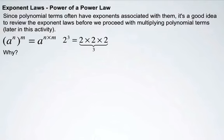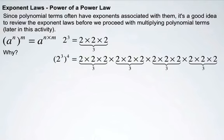Why? 2 to the third. 2 to the third to exponent 4 means 2 to the third, or this, 4 times. 1, 2, 3, 4.